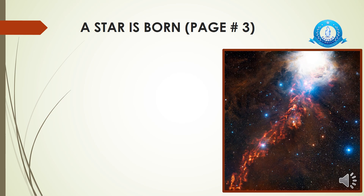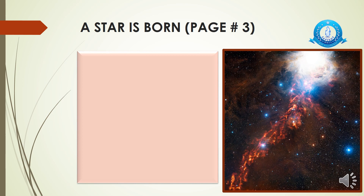Our next subtopic is 'A Star Is Born,' given on page three of your books. There is no relevant picture in the book, so I have added pictures here for better understanding. We will go through how a star is born, then I will show different stages with pictures. A star is born from a nebula — remember, nebula is a kind of cloud made up of gases, dust, and cosmic rays. Please underline this line: 'A nebula is huge and does not have a uniform shape.' I'll also share links with you.